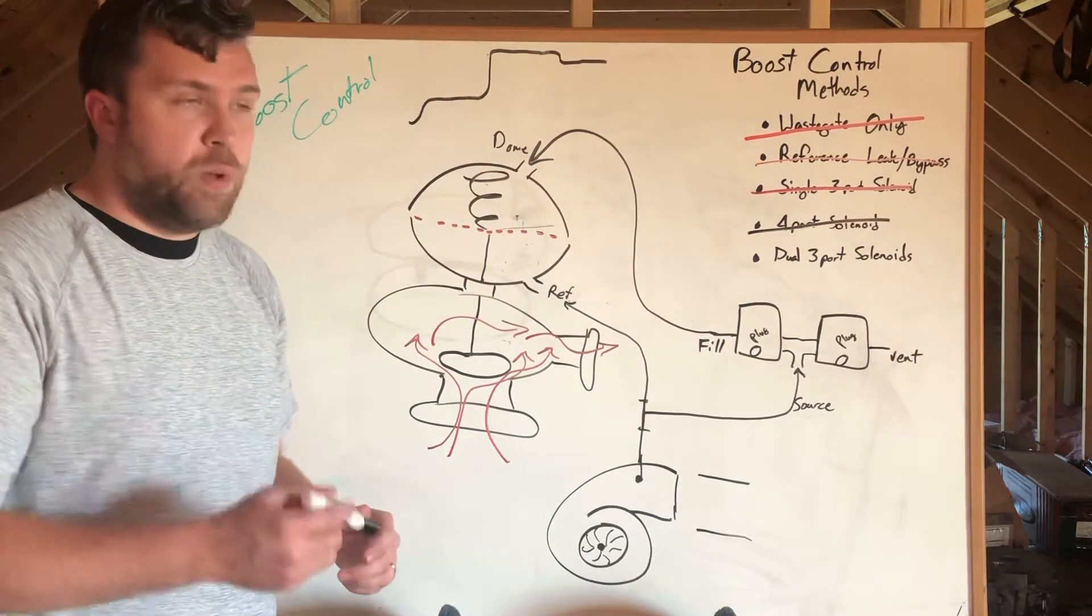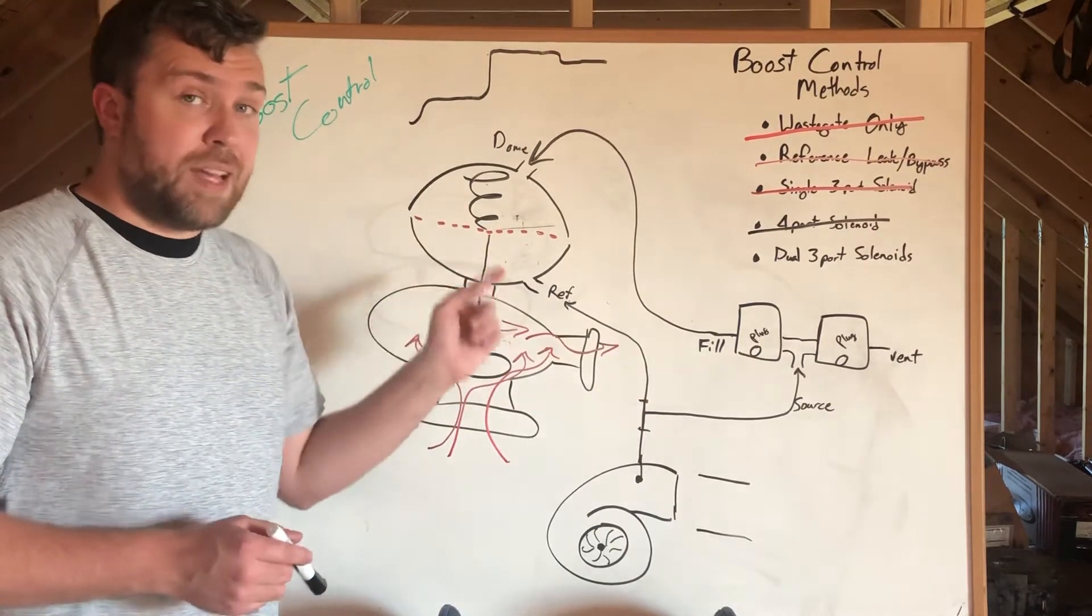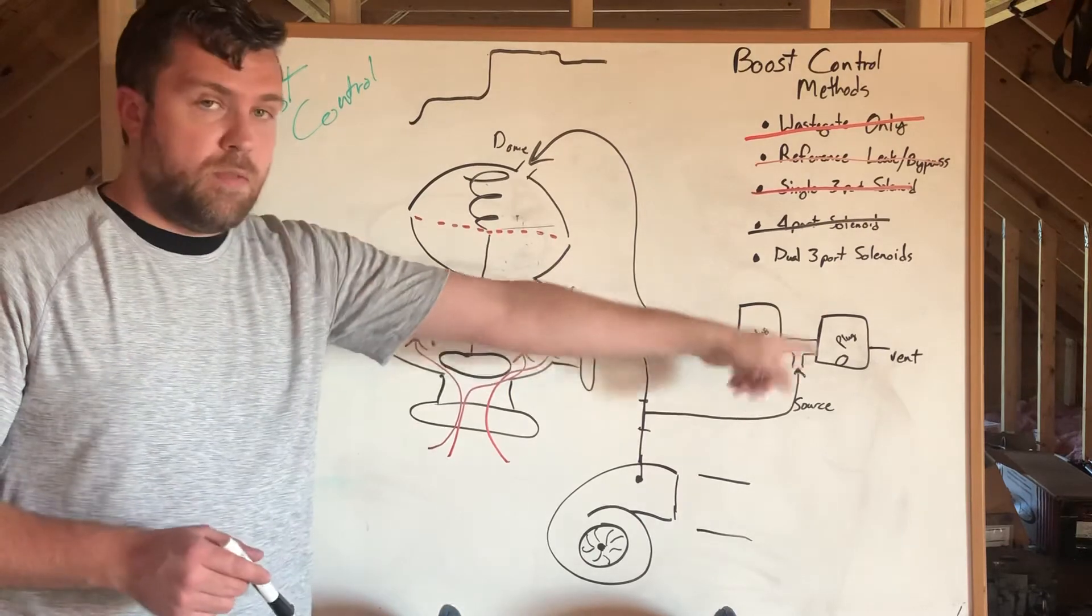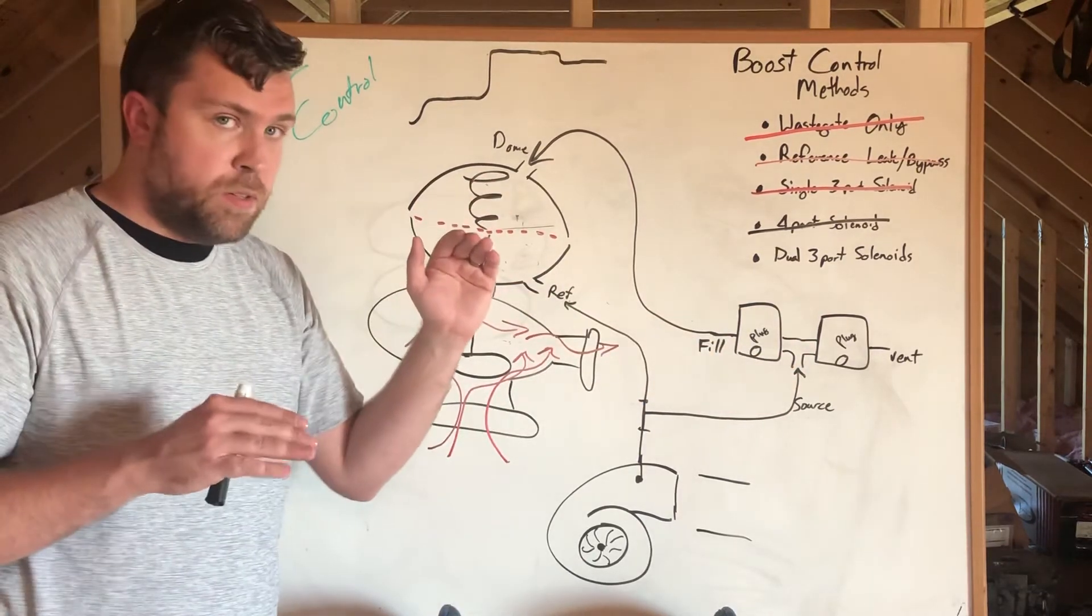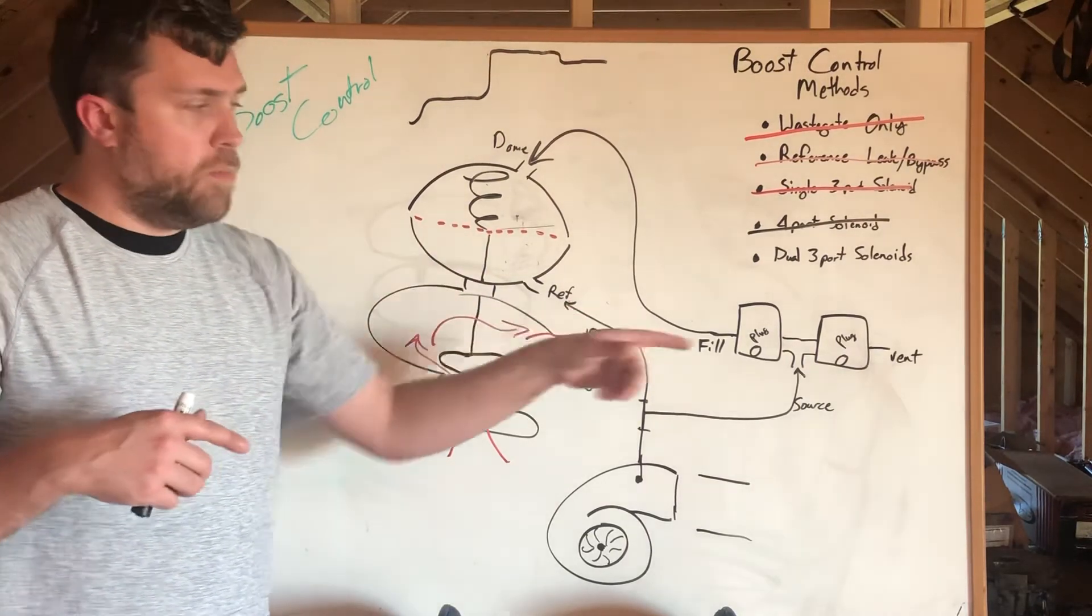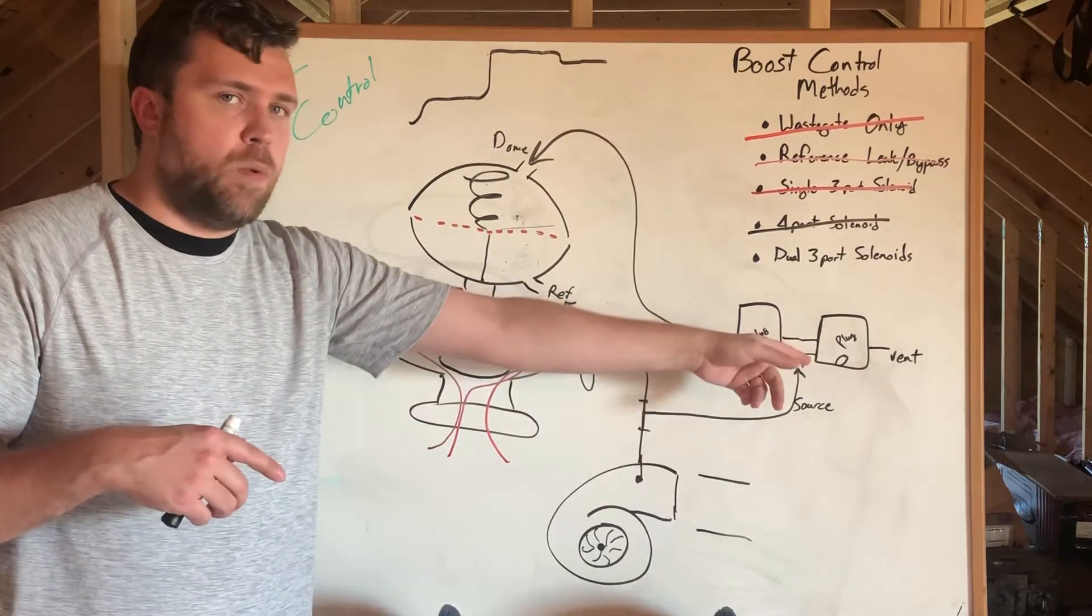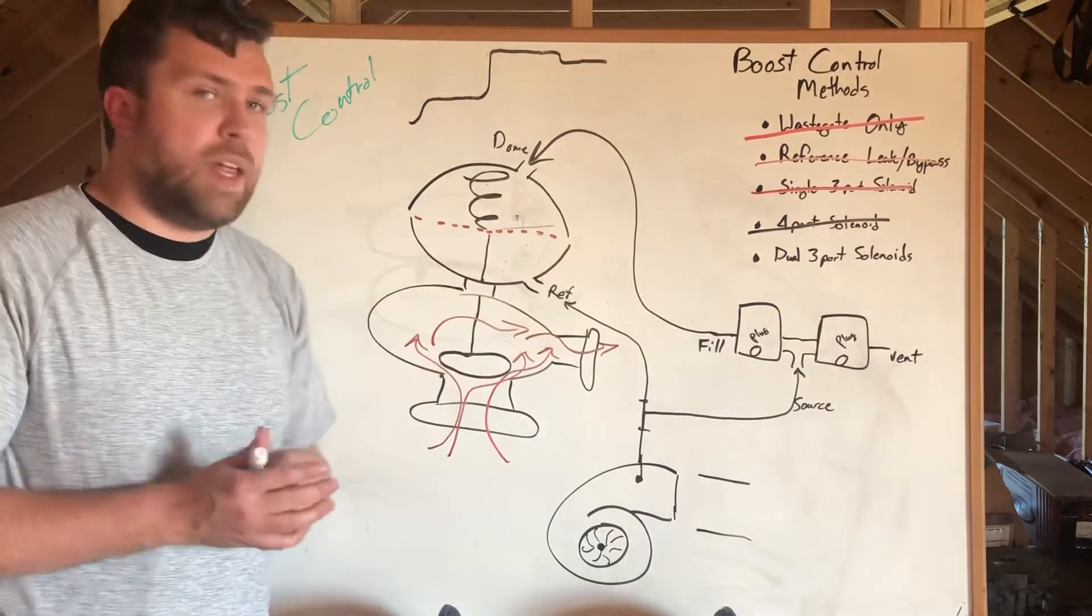And then we use a second table that runs the vent solenoid that's going to take your target boost versus your actual boost and create an offset in duty cycle. It runs that solenoid to create that offset so that it hits a flat line boost target.